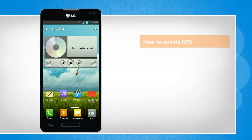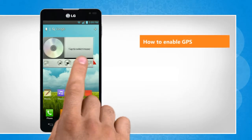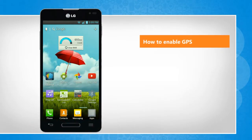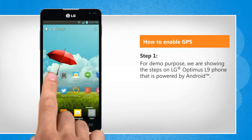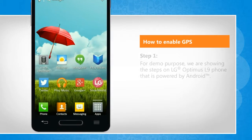Hi friends! To use the location-based services on your Android phone, you need to enable GPS. Here are the steps to enable GPS on your Android phone. For demo purpose, we are showing the steps on LG Optimus L9 phone that is powered by Android.